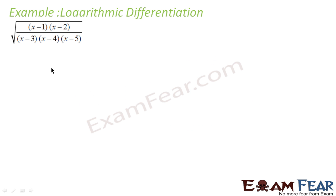If y is equal to this complex value: root of (x minus 1)(x minus 2)(x minus 5) divided by (x minus 3)(x minus 4)(x minus 5). And I have to find the derivative of this. Looks scary.